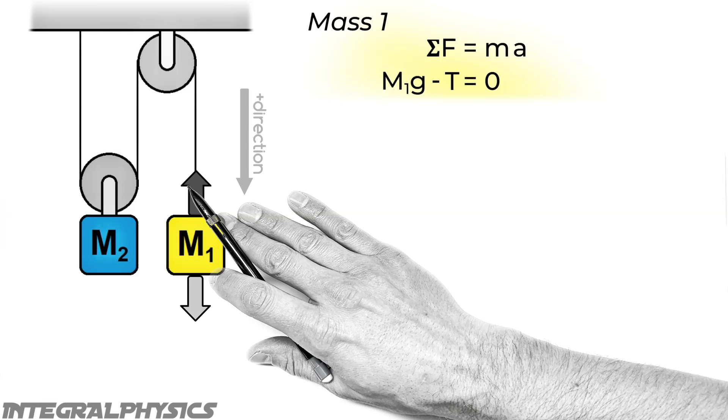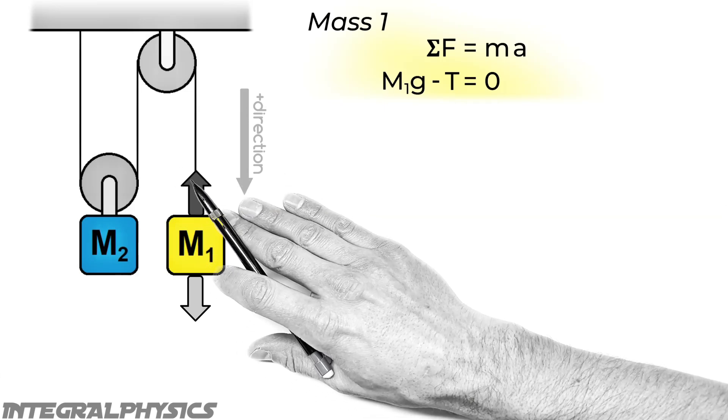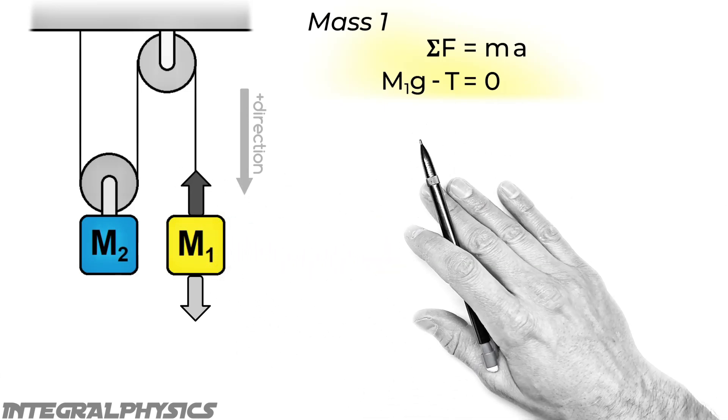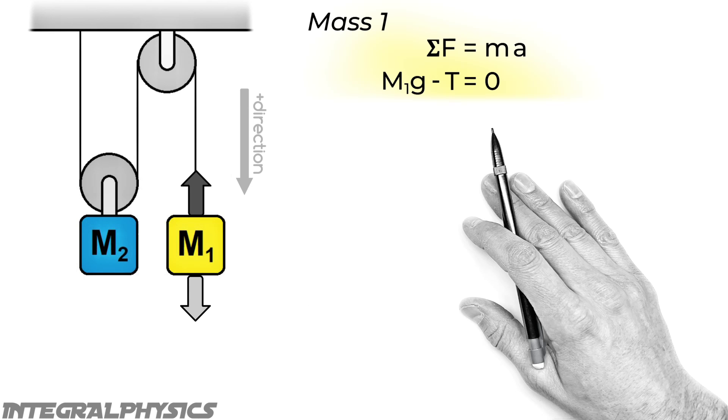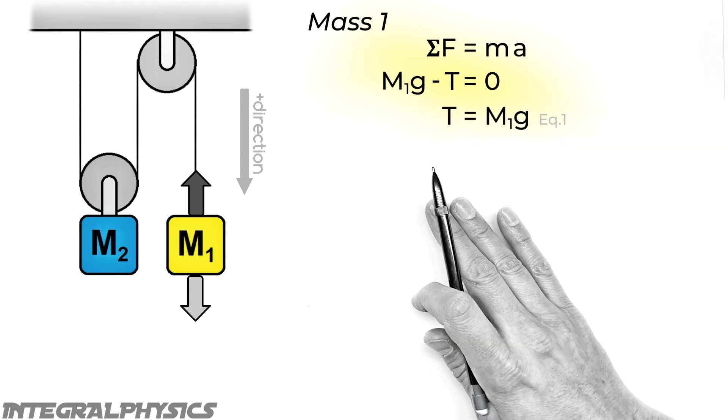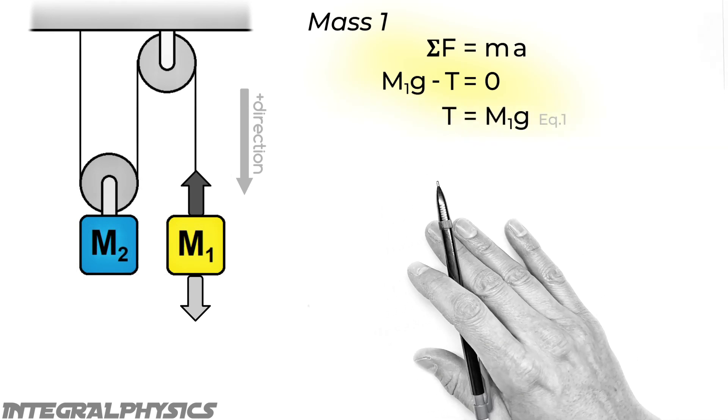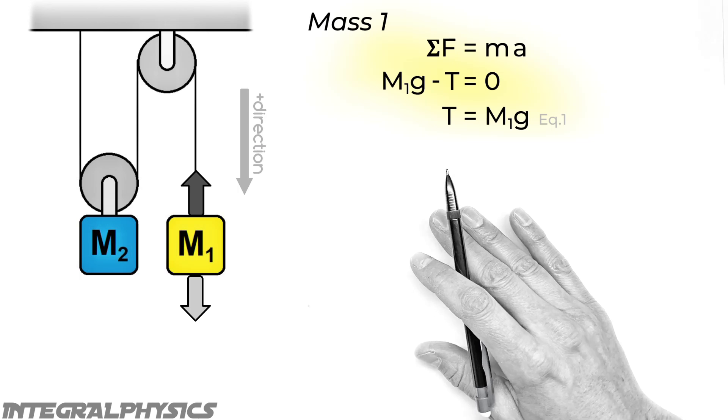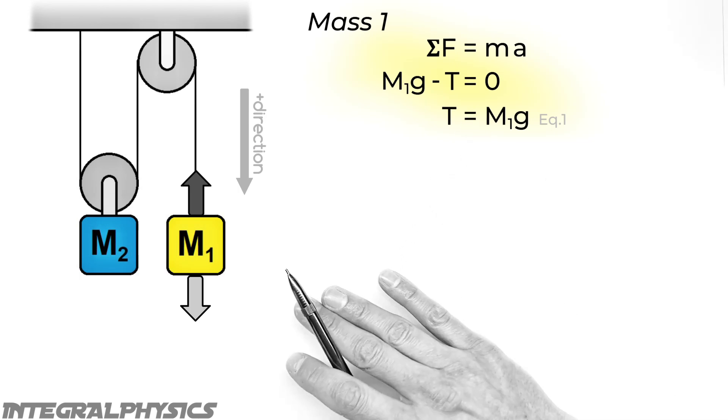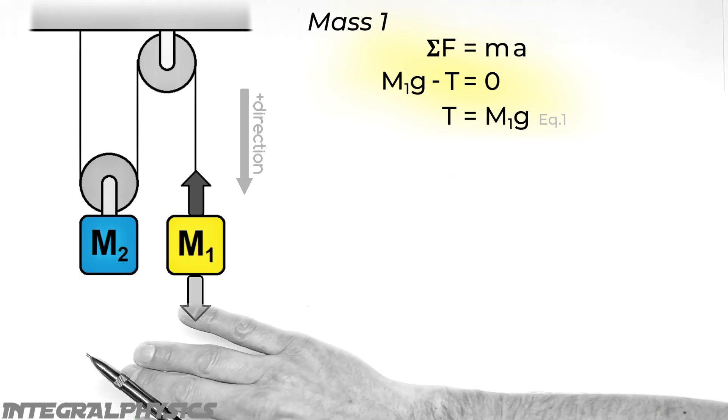Now because we want this block to remain in equilibrium, we want its acceleration to be zero. So we're going to say this value MA is zero. Now for reasons that might not be totally clear yet, I'm going to rearrange this equation for T right here. And we're just going to leave that. And we'll relate that equation to the tension on this other block later.